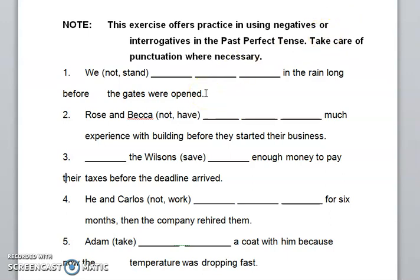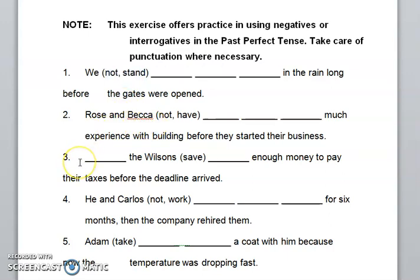Now, how will you tell that you have to change the word into interrogative case? It will help you — note the structure. In the second sentence, there is a blank, and in the third one, the first blank is followed by the subject, and the second blank comes after. That means you have to change it into the interrogative case. So be careful while solving this exercise.